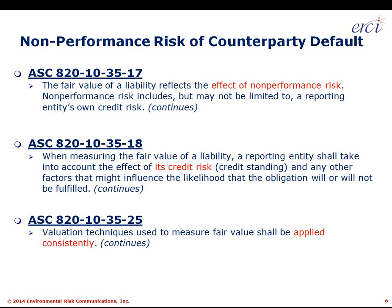ASC 820 also notes that non-performance risk includes but may not be limited to a reporting entity's own credit risk. Consider General Motors sliding into bankruptcy in June 2009 — it did not discount its $300 million environmental reserve to reflect its declining likelihood of paying that reserve. That environmental reserve ultimately was negotiated at $940 million, so it actually went up quite a bit in the bankruptcy process over the ensuing several years.